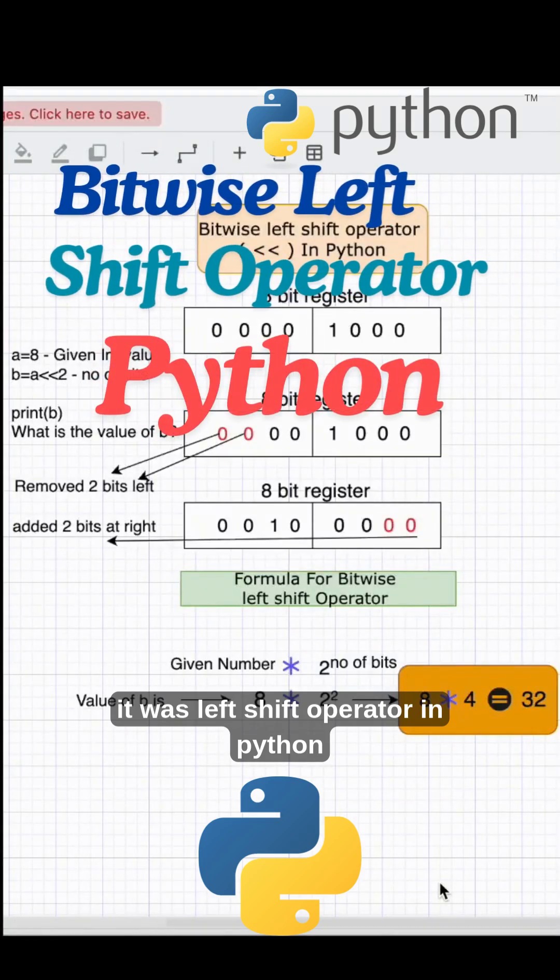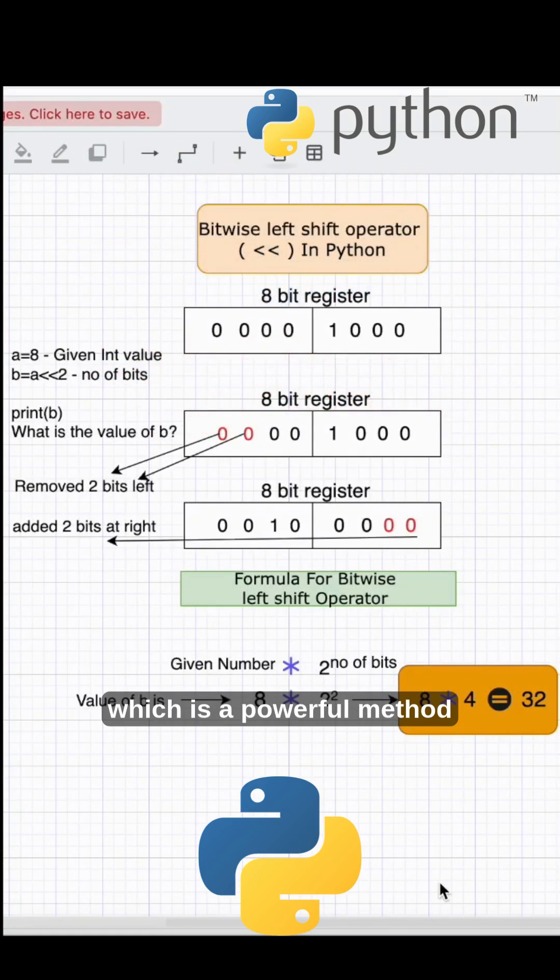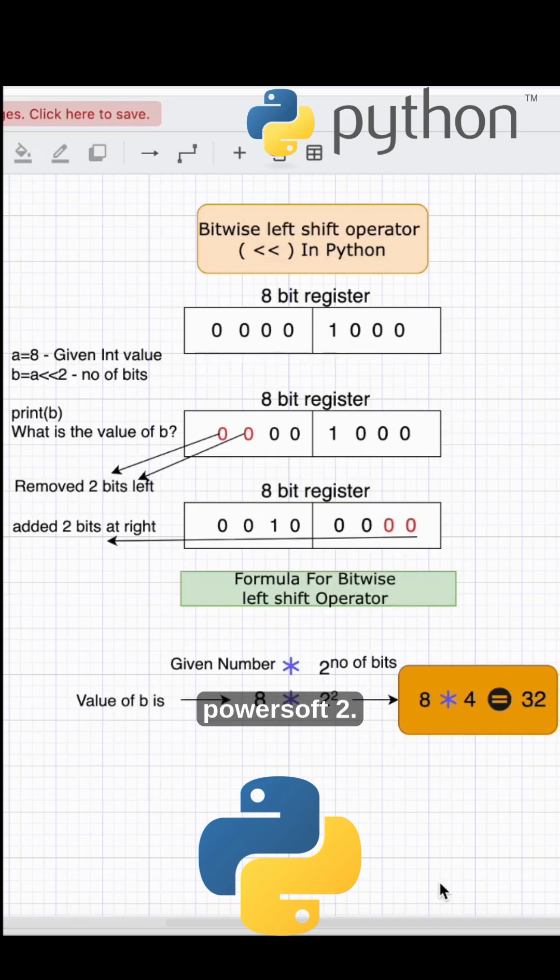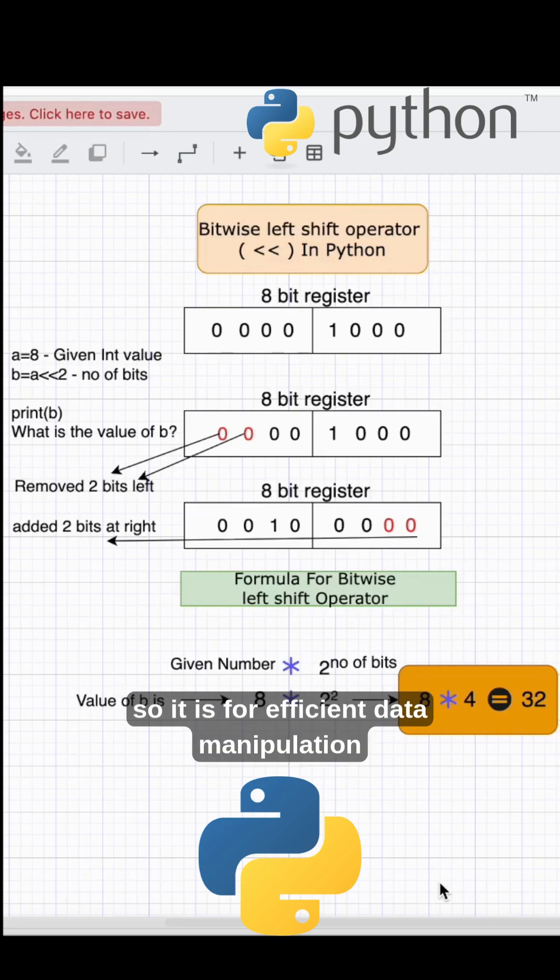The left shift operator in Python is a powerful method for performing efficient multiplication by powers of two. Let us explore some of its functionalities and why we use it for efficient data manipulation, including multiplications and binary data manipulation and algorithm design.